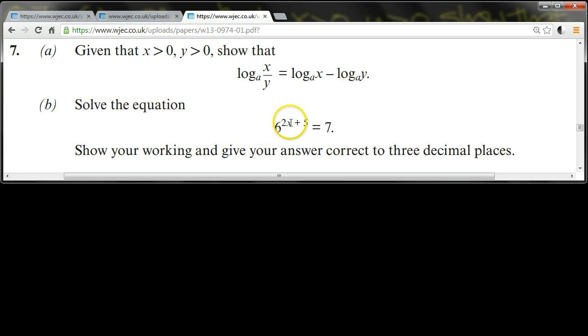Part b, solve the equation 6 to the power 2x plus 5 equals 7, show your working, and give your answer correct to three decimal places.